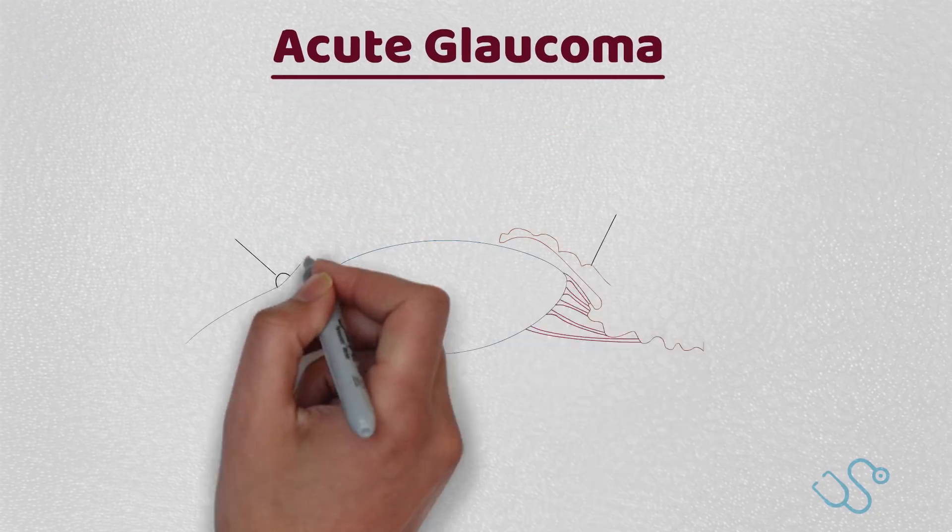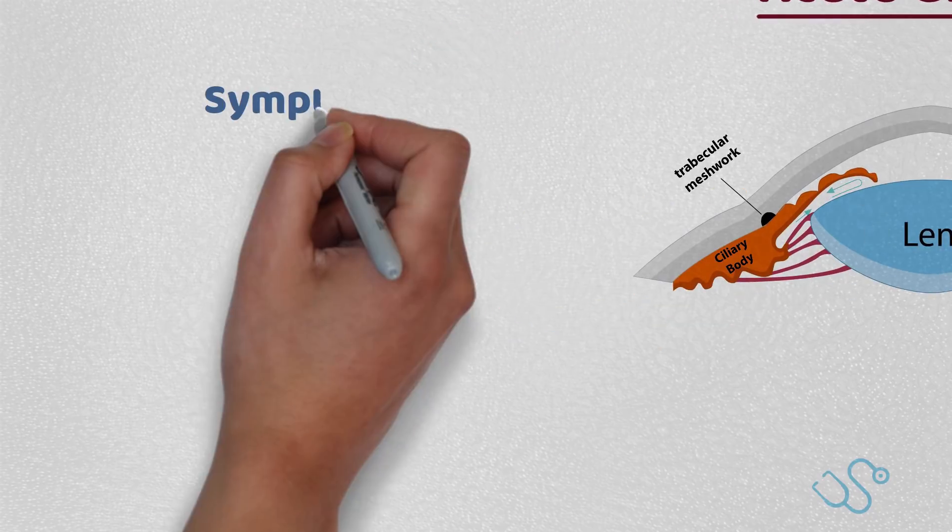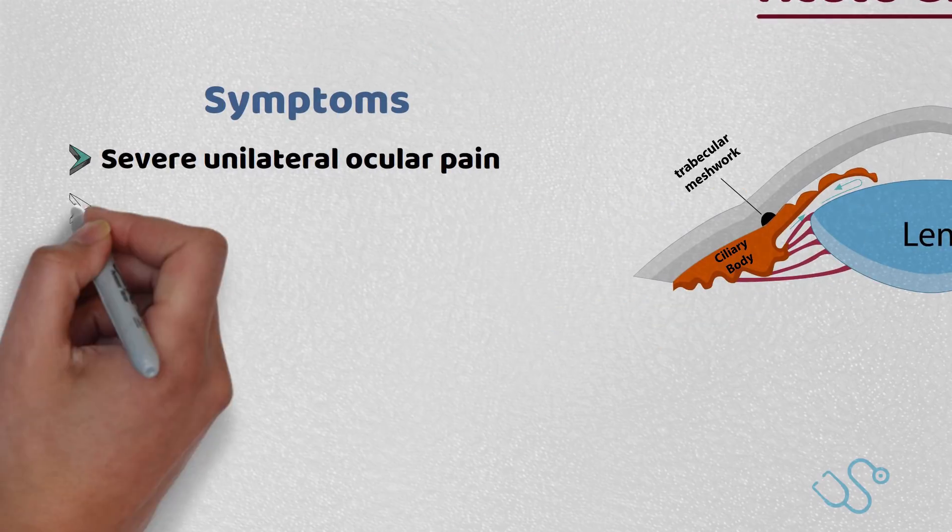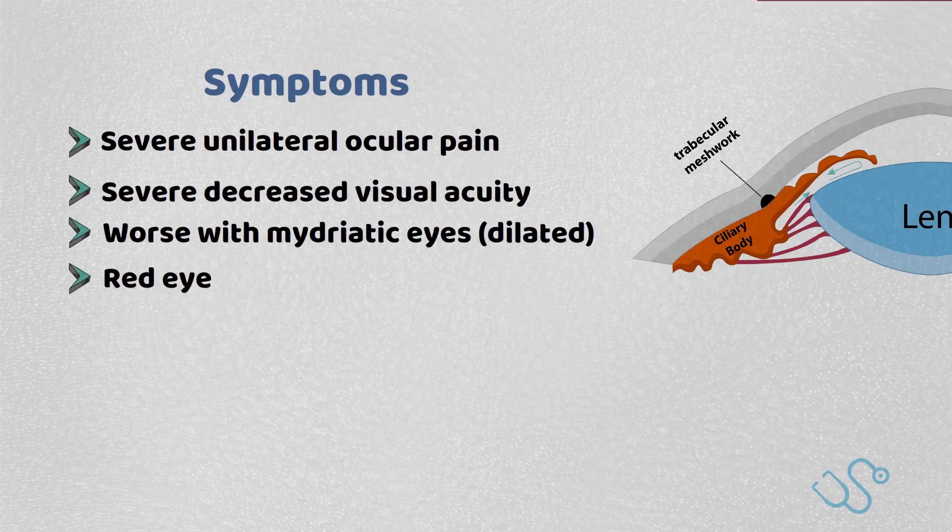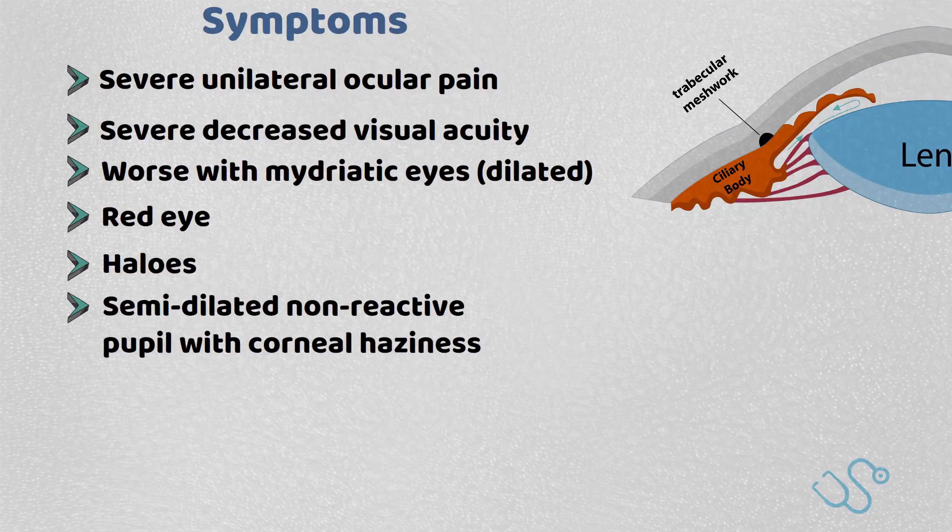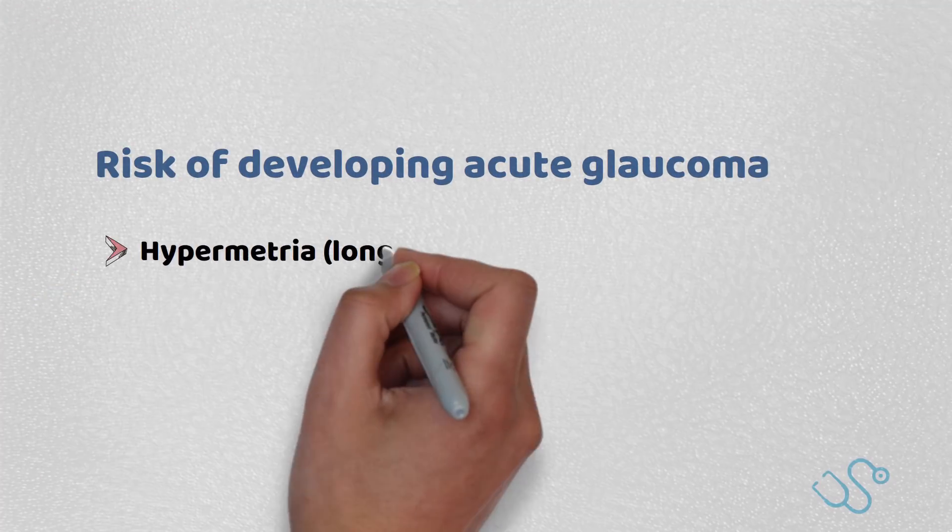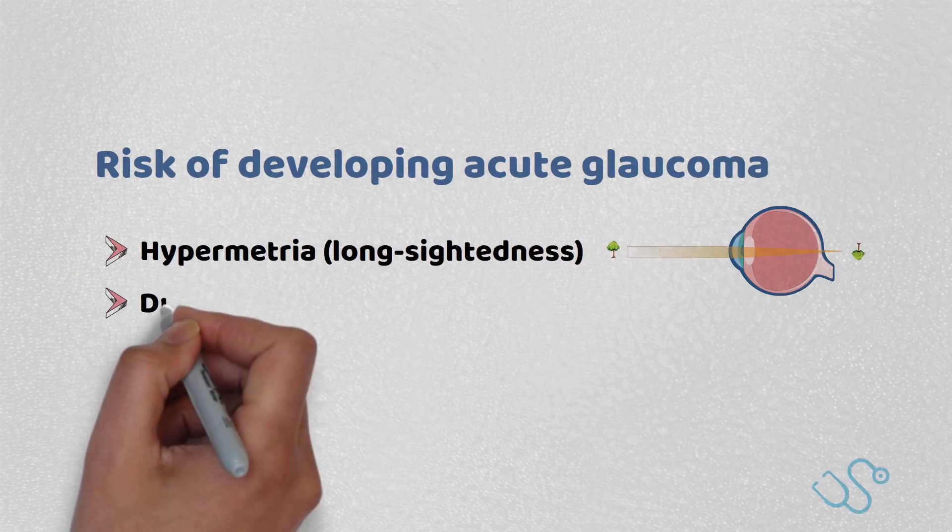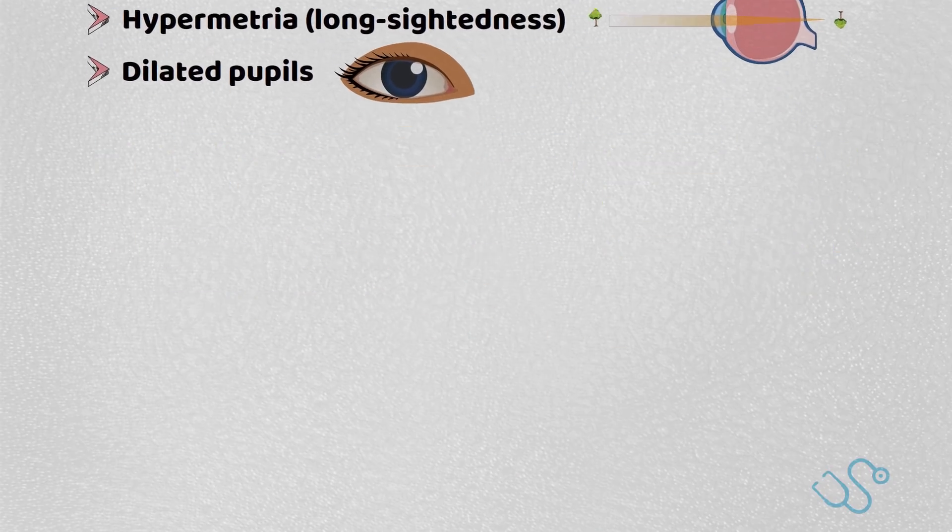Moving on to acute angle closure glaucoma, or acute glaucoma, this is considered an emergency where patients often present with symptoms such as severe unilateral ocular pain, severe decreased visual acuity worsened when there's dilated eyes, red eyes, halos, or semi-dilated non-reactive pupils. Typically when you examine them, there's some corneal haziness. There are some people that are high at risk of developing acute glaucoma, including those with long-sightedness or dilated pupils.